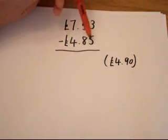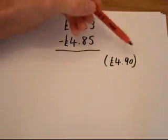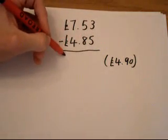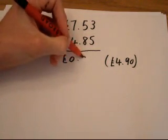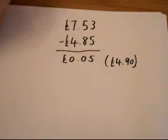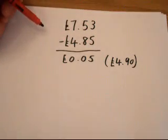Now I'm going to think, what did I add on to £4.85 to get to £4.90? It was five pence, so I'm going to write five pence underneath here, making sure that I put everything in the correct column for the place value.